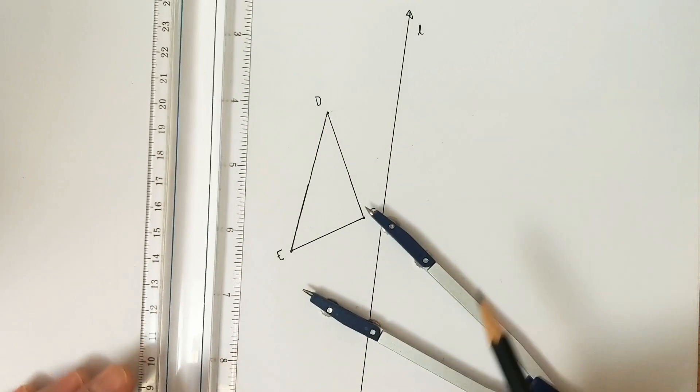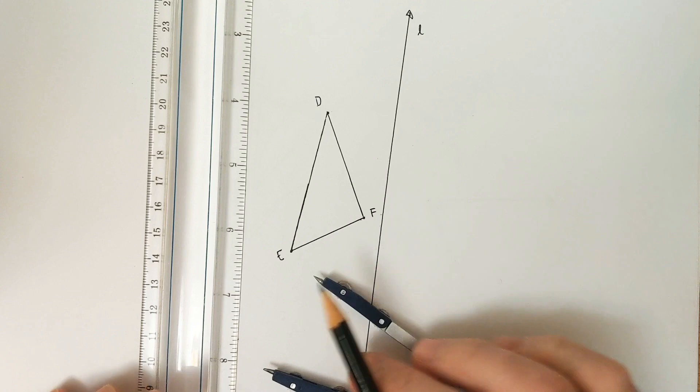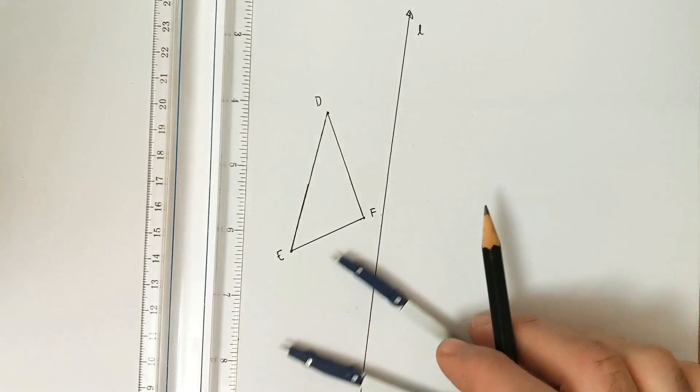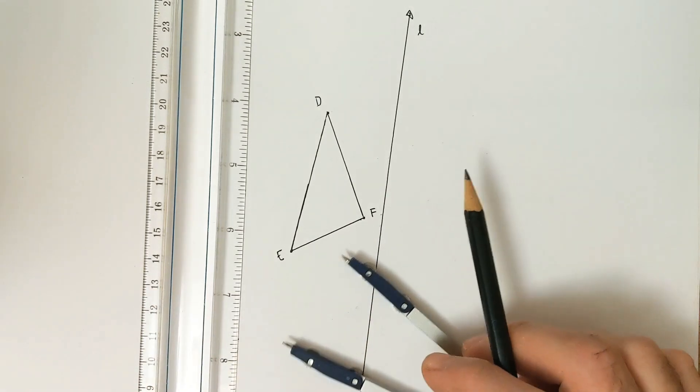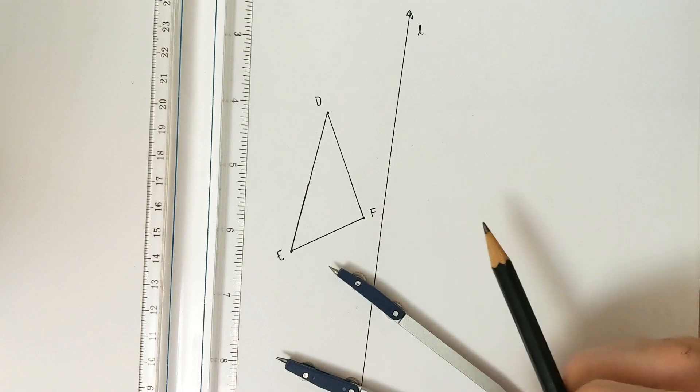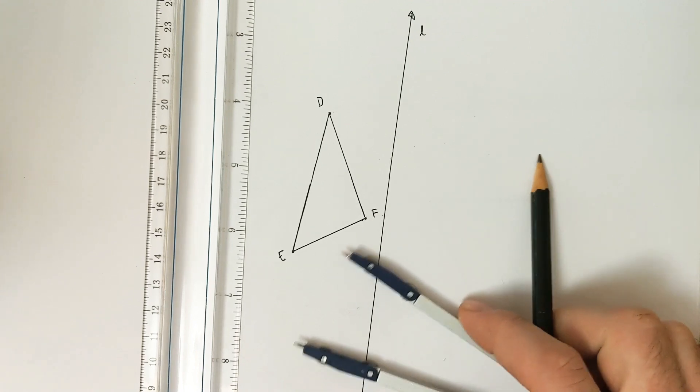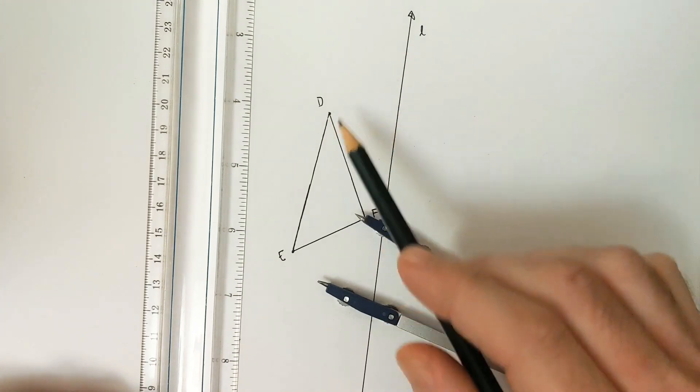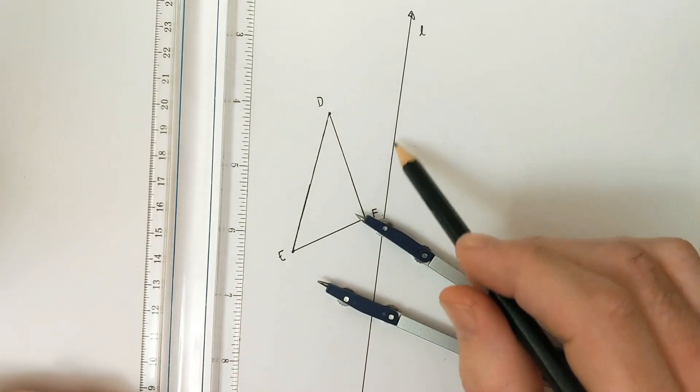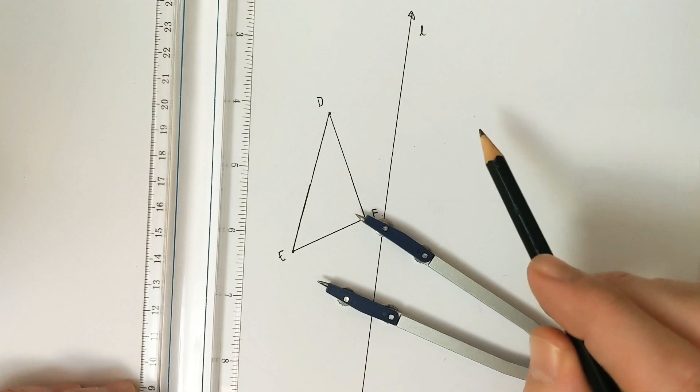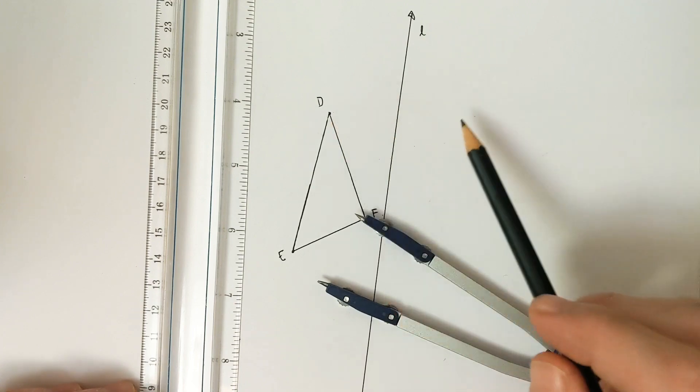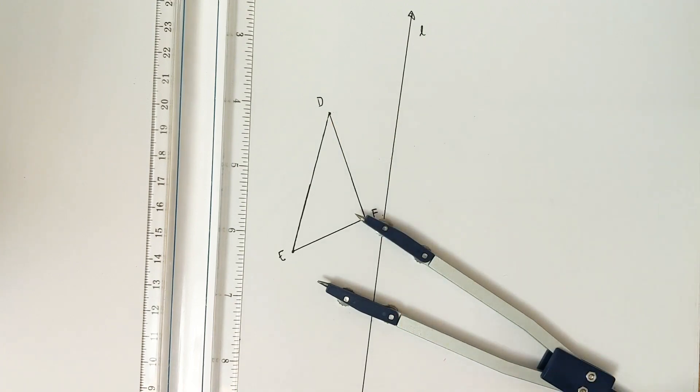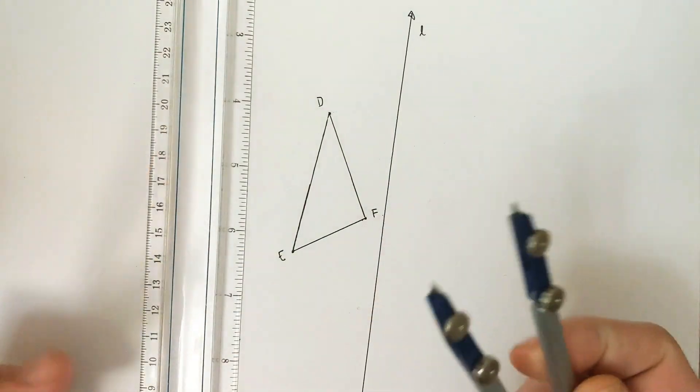And so in this construction, we're actually going to do this without drawing any perpendicular lines. We're actually going to take advantage of some facts about isosceles triangles and use our compass to essentially construct pairs of isosceles triangles that share a base but point in opposite directions. And that'll give us where our image point goes. So we'll see that once we construct our first point.